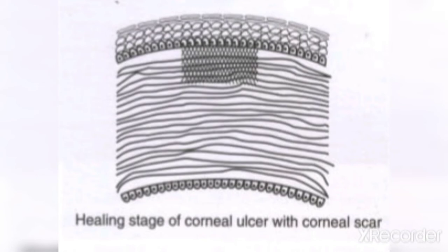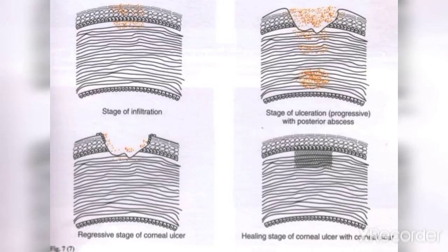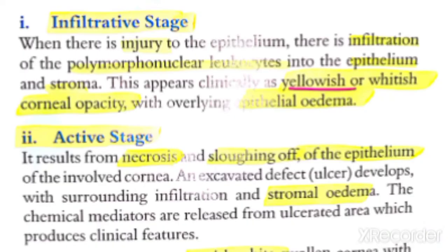In the infiltrative stage, when the epithelium is initially injured by trauma, bacteria enter into the stroma. Polymorphonuclear leukocytes (PMNs) come to that area. Opacity appears on the cornea, which is visible to us. The injured corneal epithelium is infiltrated by bacteria, leucocytes arrive and give a yellowish-white color.